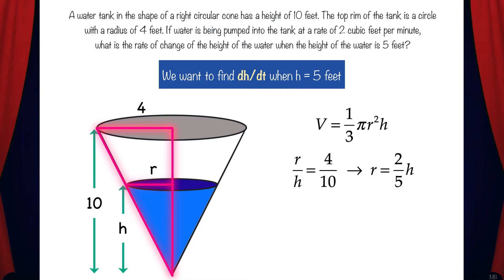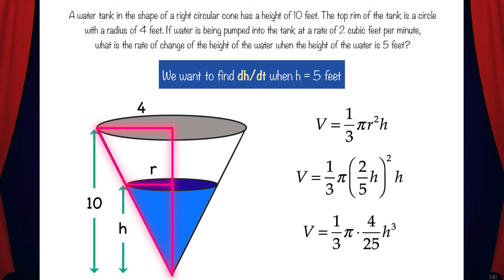The way we'll do this is by using ratios from similar triangles. We can see that r over h equals 4 over 10 because of similar triangles. Then we'll solve for r, which equals two-fifths h. We can substitute this into the V equation and we get V equals one-third pi times four-twenty-fifths h cubed. The reason we substituted two-fifths h for r is because now we have V in terms of h only, so when we take the derivative with respect to time, we'll be able to get dh/dt in the equation.